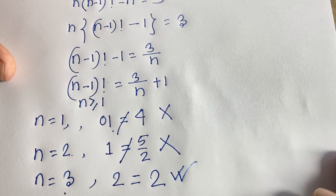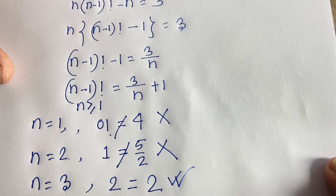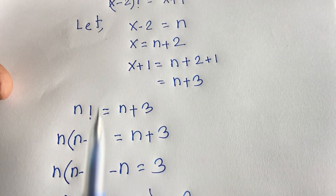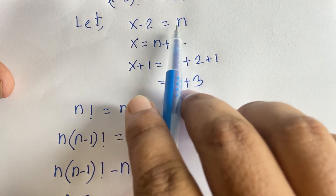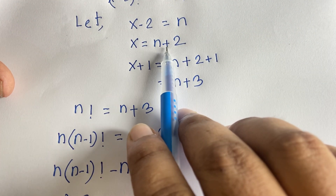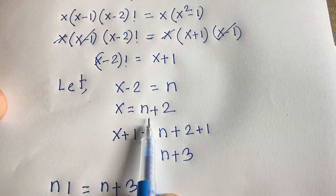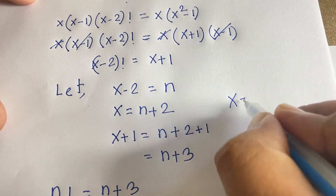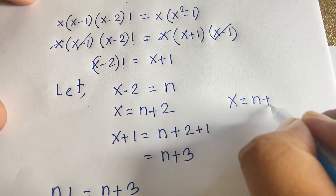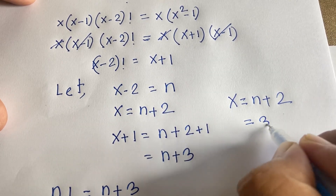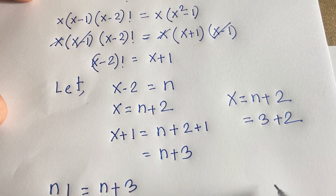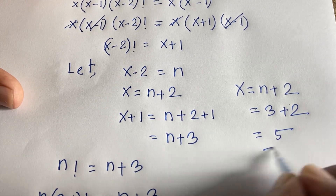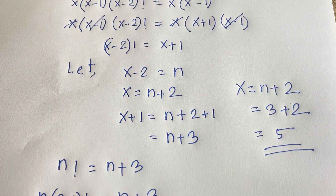So we found n is equal to 3. But recall x minus 2 is equal to n, so x is equal to n plus 2. We found n is equal to 3, so x will be 5. Yes, x is equal to 5. This is our final answer.